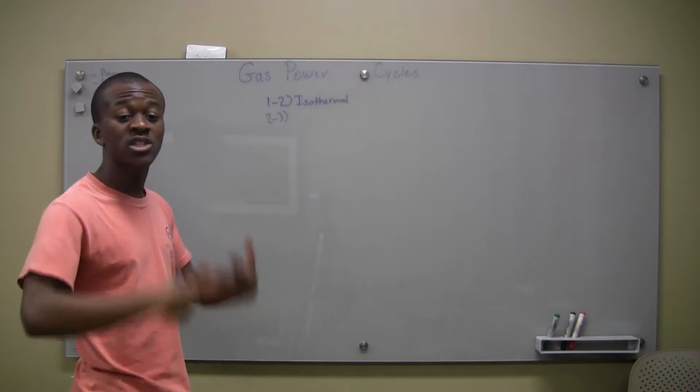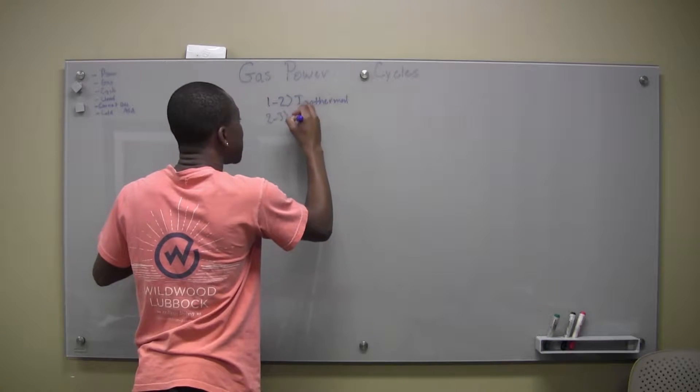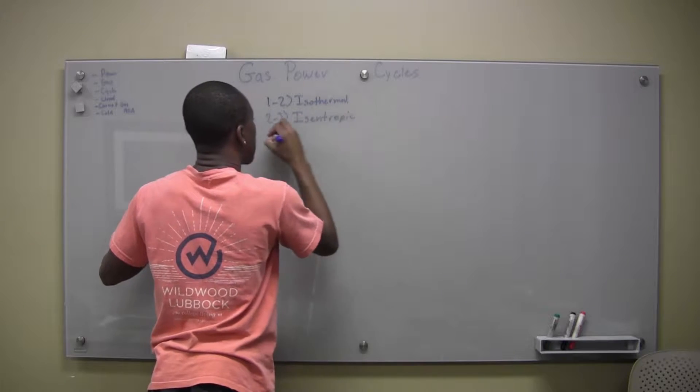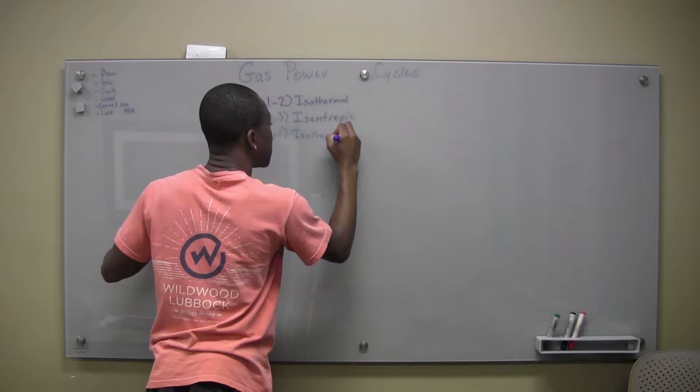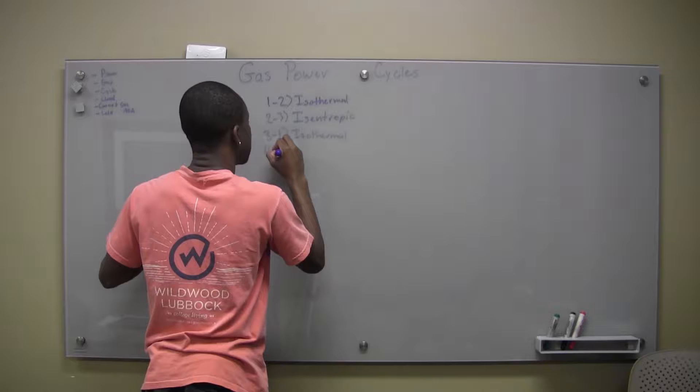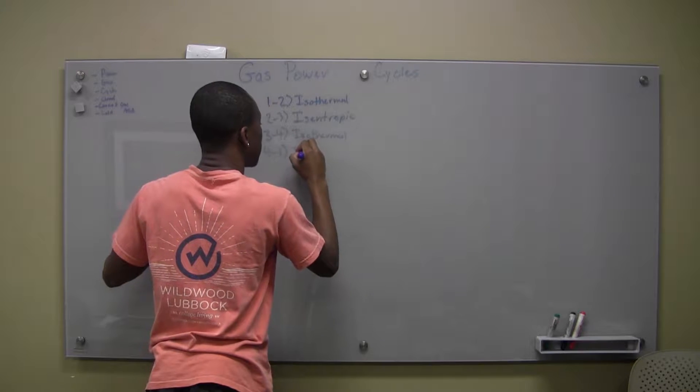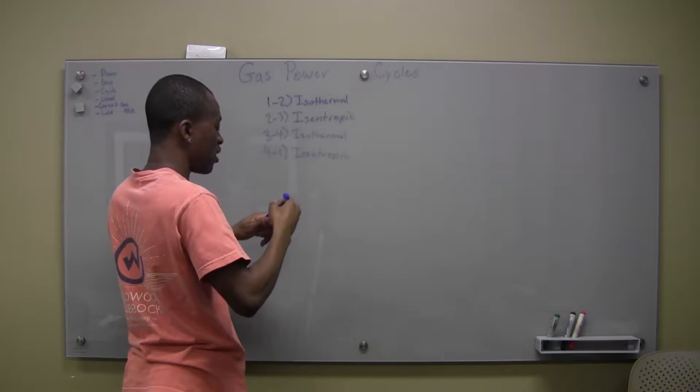But an adiabatic plus a reversible process gives us an isentropic process. And I didn't say this at the time, but entropy is coming more into play now, so we can take that into account. So that's isentropic. And then this is isothermal again, and then three to four, and then this is isentropic again. And that sort of looks a certain way on a graph.